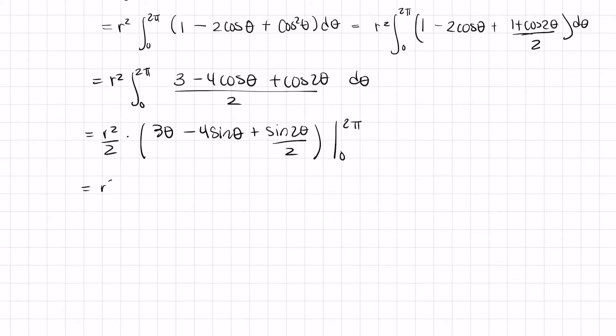So this is R squared over 2 times 6 pi minus 4 sine of 2 pi plus sine of 4 pi over 2 minus 3 times 0, that's just going to be 0 minus 4, sine 0 plus sine of 2 times 0 over 2. So lots of things are going to go away. That is 0. Sine of 2 pi is 0. What is this? Also 0.